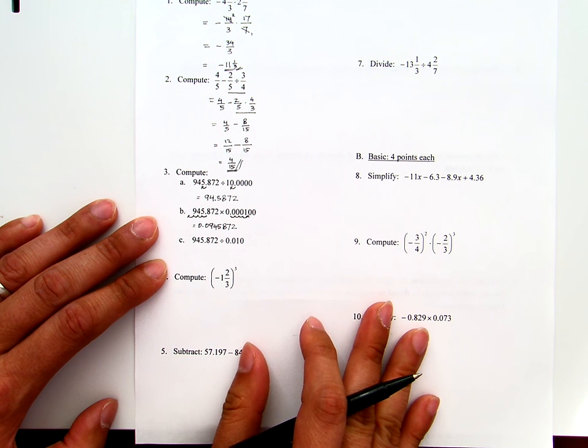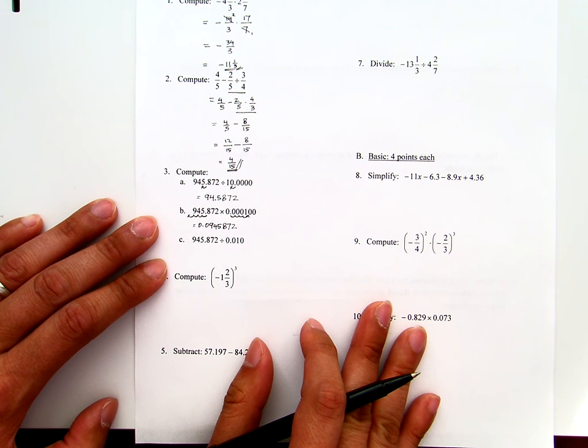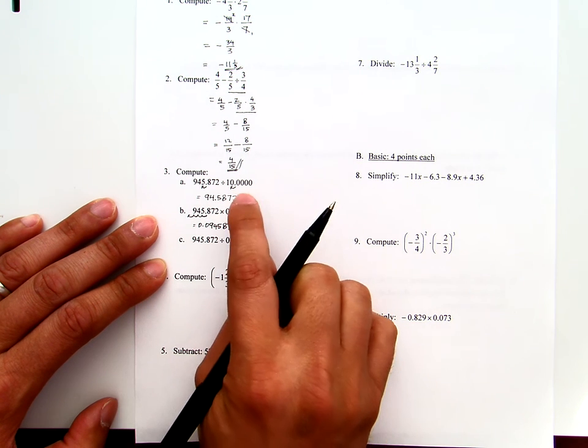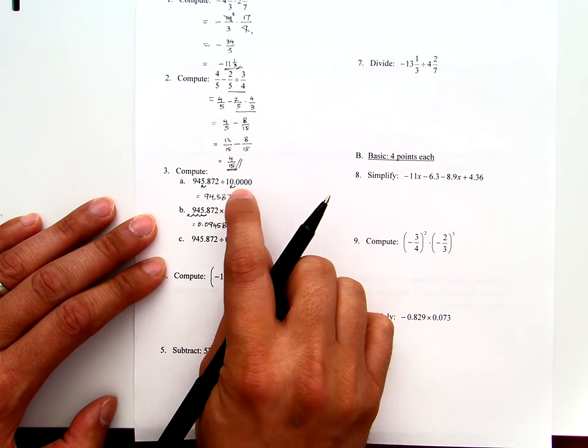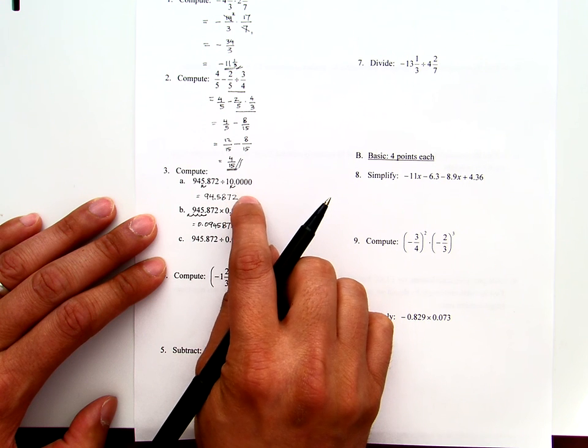Now, some students think, 'Oh, just move as many zeros as you have.' That's not correct. As you can see here, I can trick you with a lot more zeros, but that's not the point. The point is how to make it one.